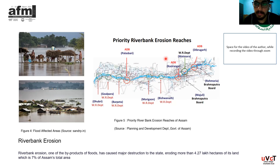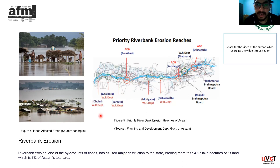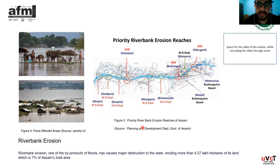Riverbank erosion has lasting effects on people — they lose their land, their houses get washed away with the river as debris, and livestock is lost. In search of shelter, people move to higher regions. They lose their identity and suffer from financial crisis. Sometimes they are also termed as illegal immigrants from Bangladesh. They are not in a state to rebuild their houses again, and they roam around the state without livelihood. This creates a lot of socioeconomic imbalance in the state. Around 7% of Assam's total area — more than 4.27 lakh hectares — has been wiped out by bank erosion.